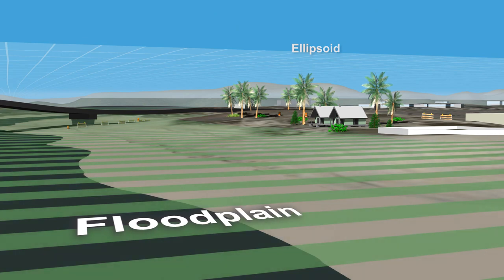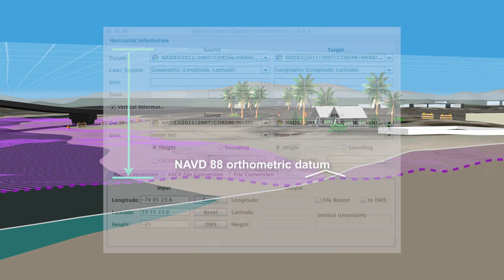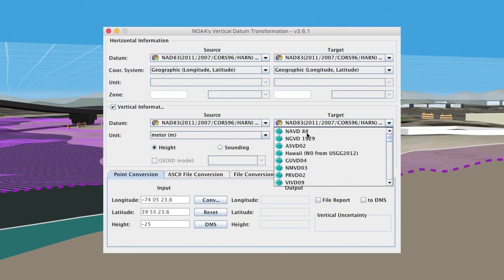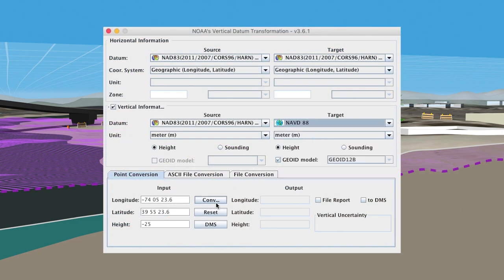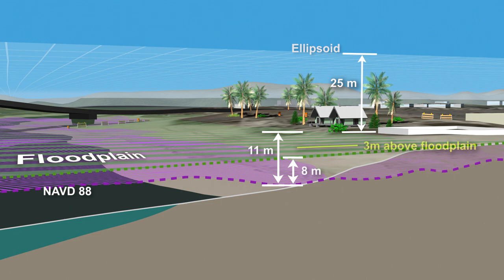Gravity is important in determining the direction water will flow. As a result, for applications like floodplain mapping, we need our data referenced to an orthometric height system, such as the North American Vertical Datum of 1988, NAVD88, which accounts for differences in gravity. NOAA's VDatum tool allows us to transform the ellipsoid height of the base of our house, which was negative 25 meters, to an orthometric height of 11 meters in NAVD88. Our floodplain map, which is published in NAVD88, has a base flood elevation of 8 meters, so we know this house is built above the high-risk flood zone.